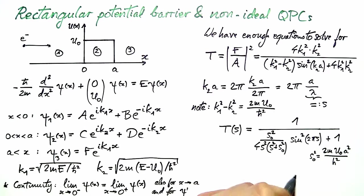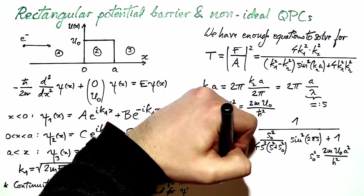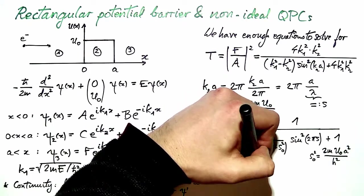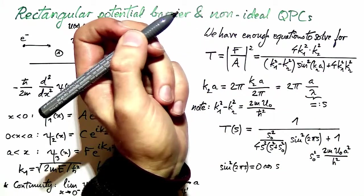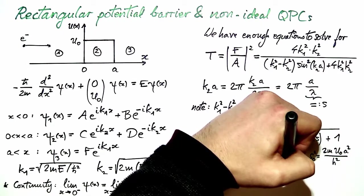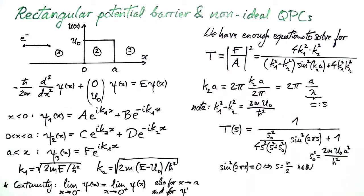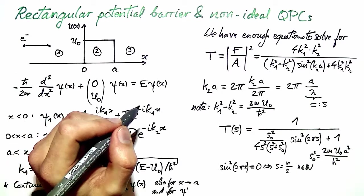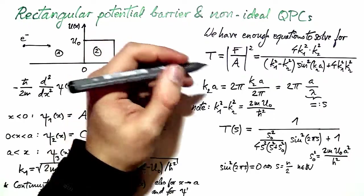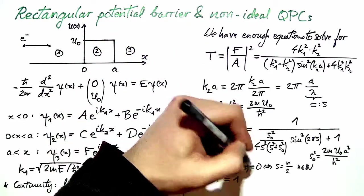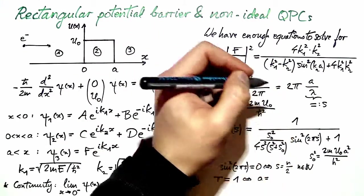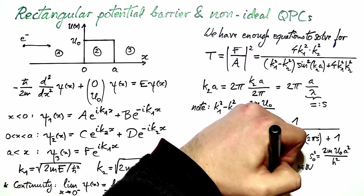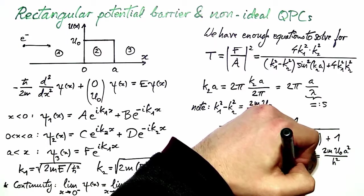Now, if you look carefully at this expression, we see that the denominator has a term which is 0 whenever s is a multiple of 1/2. And this, considering the definition of s, means that t is equal to 1. So if this is 0, t is 1, whenever the width of the barrier is a multiple of 1/2 times the de Broglie wavelength.